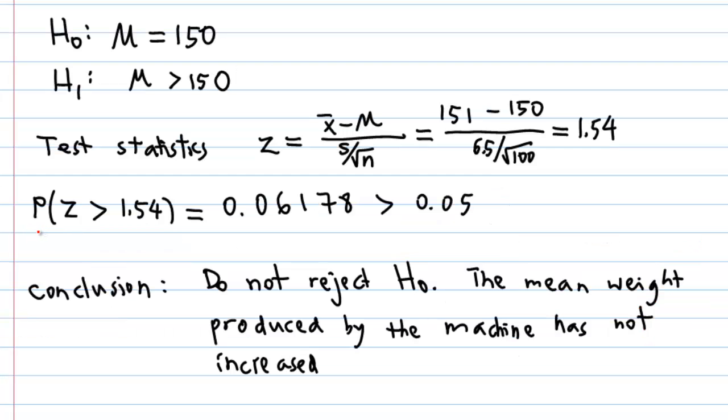Remember, this probability is called the p-value. And this p-value is greater than 0.05. So in conclusion, we do not reject the null hypothesis H0, which means the mean weight produced by the machine has not increased.